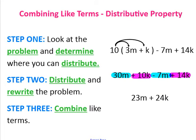Now let's talk about combining like terms with the distributive property. Step 1: look at the problem and determine where you can distribute. A big hint is to look for the parentheses and the term directly outside them — that's the term you're going to distribute. Step 2: distribute that term and rewrite the rest of the problem. Step 3: combine like terms.